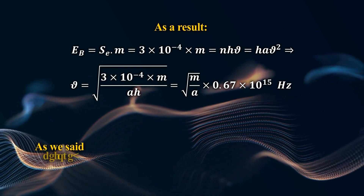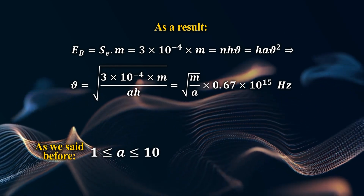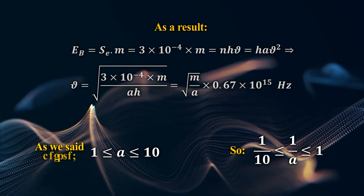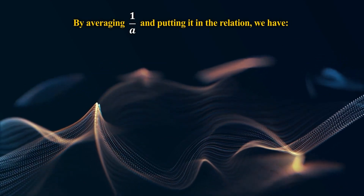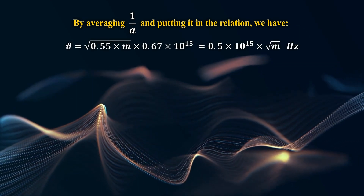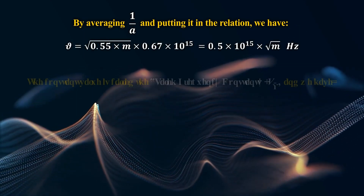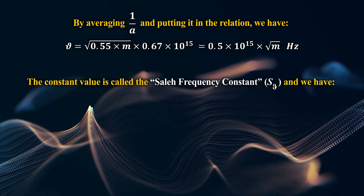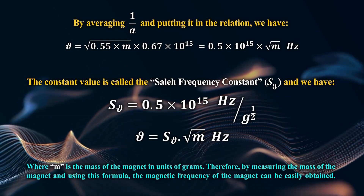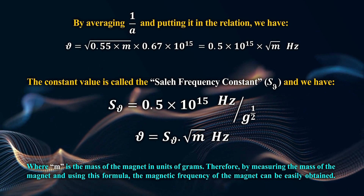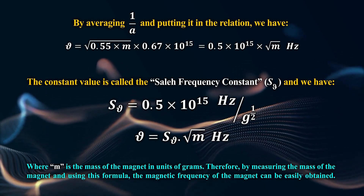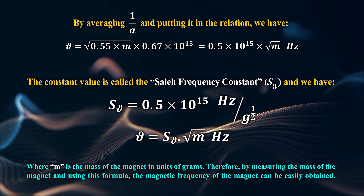As a result, by averaging 1/a and putting it into the relation, we have a simplified expression. The constant value is called the Soleil frequency constant, S of ν. We have the formula where m is the mass of the magnet in units of grams. Therefore, by measuring the mass of the magnet and using this formula, the magnetic frequency of the magnet can be easily obtained.